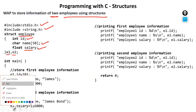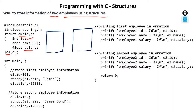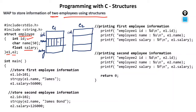The moment you create these variables e1 and e2, memory will get created. So e1 and e2 will each have three boxes — why three boxes? Because there are three members. The first box is id, the second is name (a character array of size 50), and the third is salary. The same three boxes — id, name (character array of size 50), and salary — exist for e2 as well. Always try to remember this memory structure; once clear on it, structures become easy to understand.